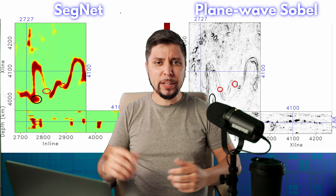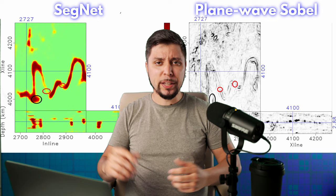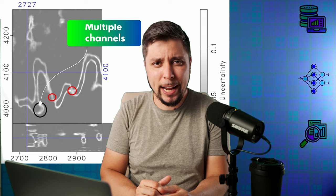The first dataset is a marine seismic survey that comes from Australia. The results are much better when compared with traditional seismic attributes. Plus, there is a posterior distribution of channel probability that gives more information. For example, the trained neural network cannot tell the difference between stacked channels very well, so there would be a lot of uncertainty in that region.